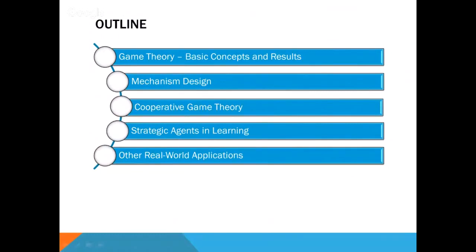Here's a brief outline of my talk. I'll start off by describing the basic concepts in game theory, then we'll look at the problem of mechanism design. After that, I'll describe cooperative game theory, which involves situations where participants are allowed to collude. We'll then look at strategic agents in learning, encompassing problems where one needs to learn unknown stochastic parameters as well as design mechanisms to elicit true values from strategic agents. I'll conclude by outlining some real world applications.